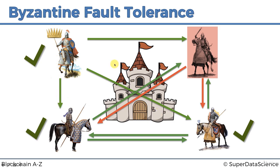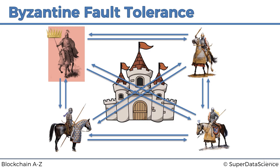The same thing applies if the general had said 'retreat' — they would all retreat and come to consensus. That was the case when one of the lieutenants is the traitor. Now let's look at the case when the main general is the traitor. If he tells everybody to attack, they'd all just attack and take the castle. The only way he can mess things up is by telling some of them to attack and one of them to retreat.